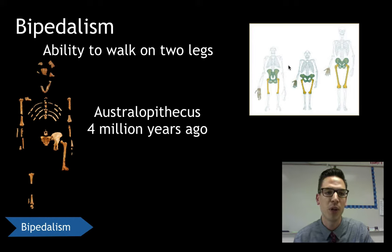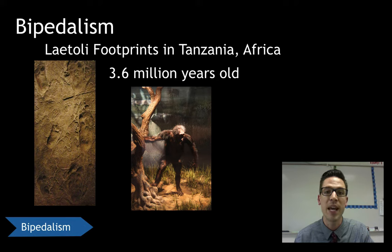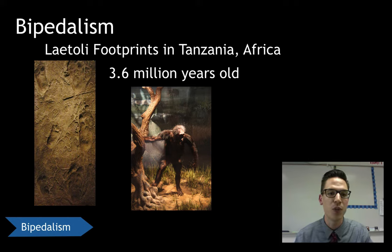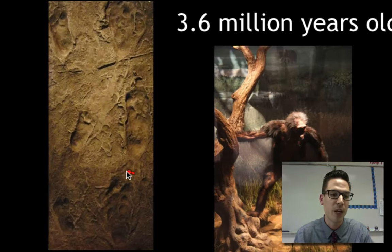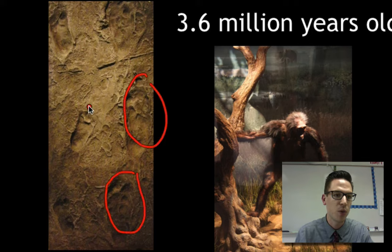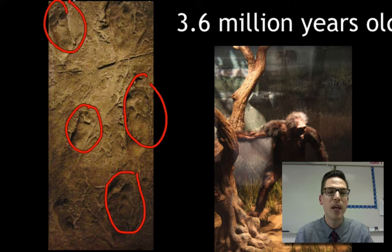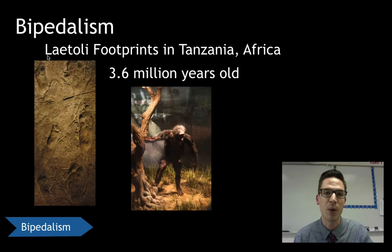Some people ask how we know Australopithecus was really bipedal. Well, another thing we found in Tanzania, Africa, are the Laetoli footprints — fossilized footprints dated back to about 3.6 million years ago, showing signs of bipedal movement from Australopithecus. Here is a left footprint and a right one, and smaller ones next to them. It shows that these species were walking around on two legs — bipedalism — which was one of the first things to evolve early in hominid evolution.